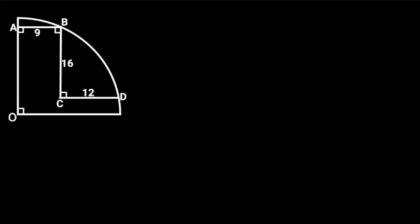This figure is a quarter circle with 3 line segments of 9, 16, and 12 units. If the 3 angles formed at the point of intersection of these 3 line segments is 90 degrees, find the radius of the quarter circle.